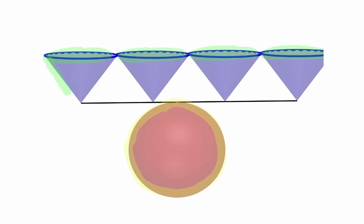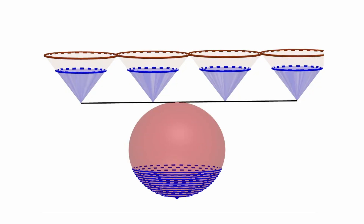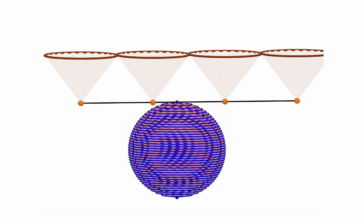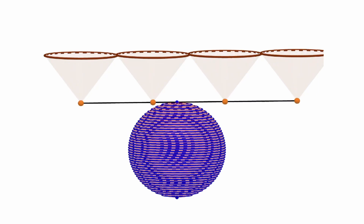Now what would happen if we consider the volume for each of those cones and we place that volume inside the sphere? Let's visualize that. Let's see that one more time. It took the volume of four different cones to cover the volume of the full sphere.